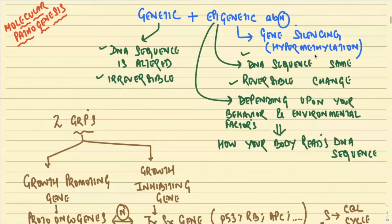Now we are going to understand the molecular pathogenesis of colorectal carcinoma. In today's world, morphology alone is not enough — molecular pathogenesis plays a very important role. In WHO classification, tumors are now classified not by how they look, but by how they are molecularly defined. Molecular pathogenesis is playing a major role and will dominate in the next ten years.